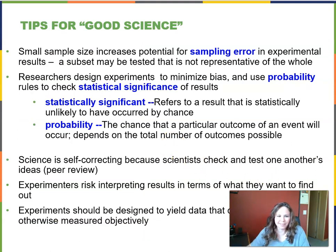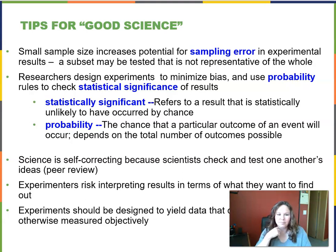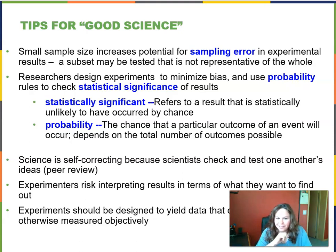Some tips for good science: avoid small sample sizes, which increase the potential for sampling error — where a subset tested might not be representative of the whole. Researchers design experiments to minimize bias and use probability rules to check for statistical significance. Statistically significant refers to a result that is statistically unlikely to have occurred by chance, meaning the independent variable is actually affecting what's being tested.